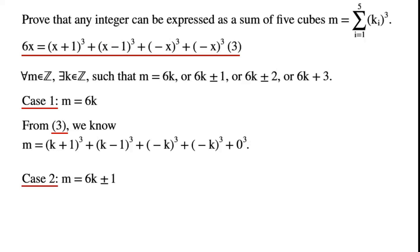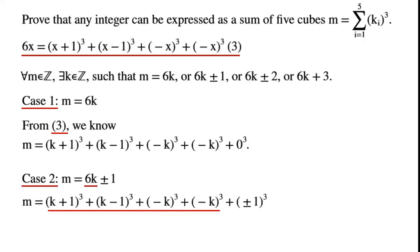Case 2: m equals 6k plus or minus 1. Using the identity, m can be expressed using cubes of (x+1), (x-1), and (-x) terms. Hence, m can be written as the sum of 5 cubes.